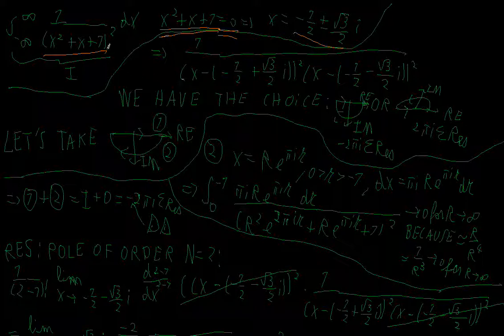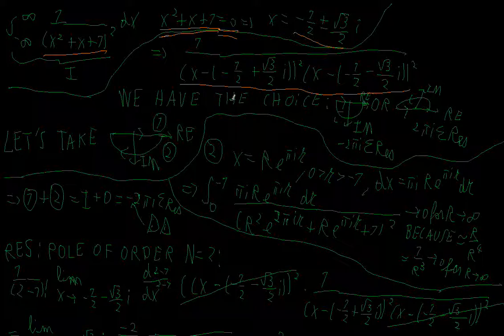Now I can factorize my denominator. Instead of simply writing x² + x + 1, I can write the denominator as (x − (−1/2 + (√3/2)i))² times (x − (−1/2 − (√3/2)i))².